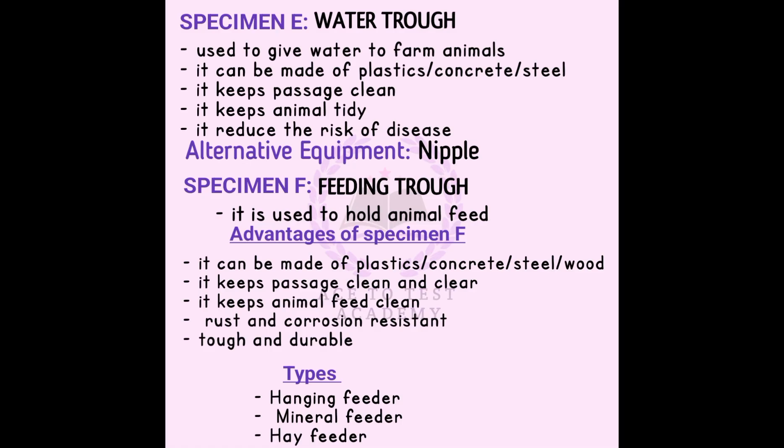Moving to specimen E, which is the water trough. The water trough is used to give water to farm animals, especially poultry. It can be made of plastic, concrete, and steel. It keeps the passage clean — the animal drinks clean water as no water is put on the floor. It keeps the animal tidy, and it reduces the risk of disease because water on the floor can attract germs.